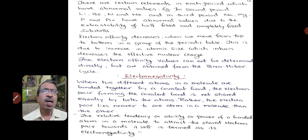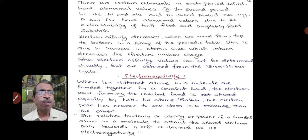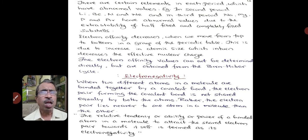There are certain elements in each period which have abnormal values. In the second period: lithium, beryllium, nitrogen, and neon. In the third period: sodium, magnesium, phosphorus, and argon have abnormal values due to the extra stability of half-filled and completely filled subshells. Electron affinity decreases when we move from top to bottom in a group of the periodic table, due to increase in atomic size which in turn decreases the effective nuclear charge. Electron affinity values cannot be determined directly but are obtained from the Born-Haber cycle.